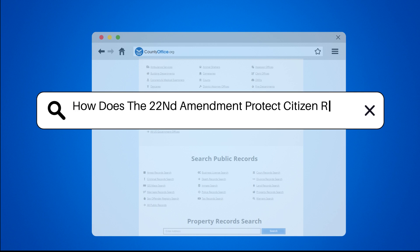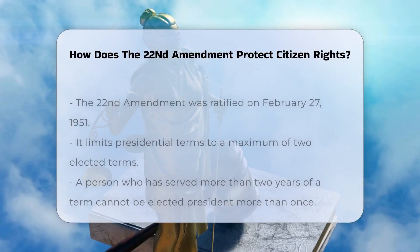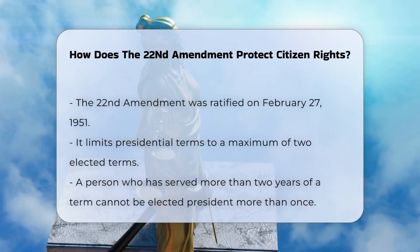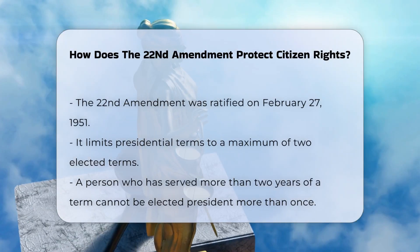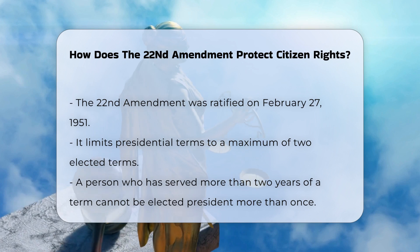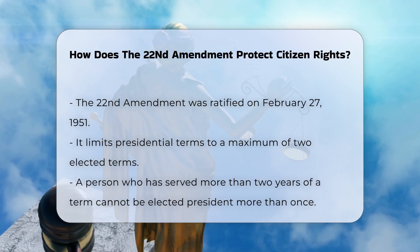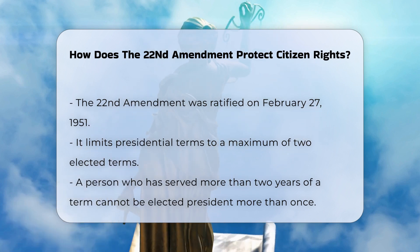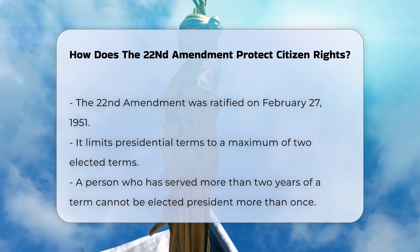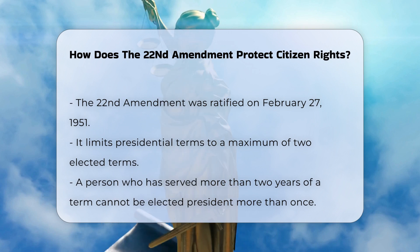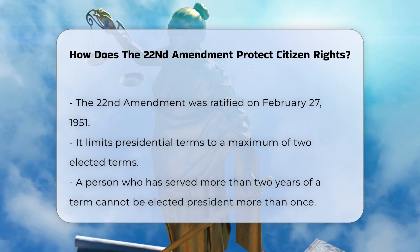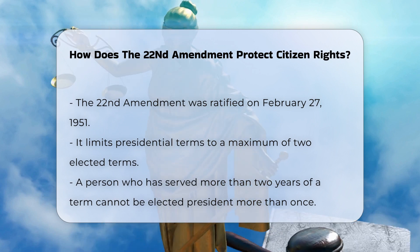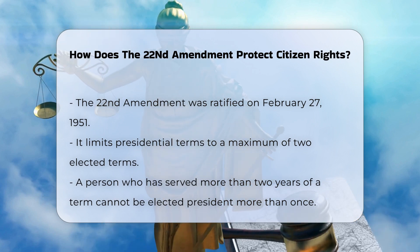How does the 22nd Amendment protect citizen rights? The 22nd Amendment to the United States Constitution, ratified on February 27, 1951, plays a crucial role in ensuring the stability and democratic nature of the U.S. government. Here's how it protects citizen rights.